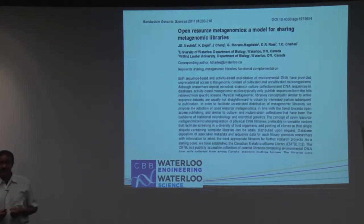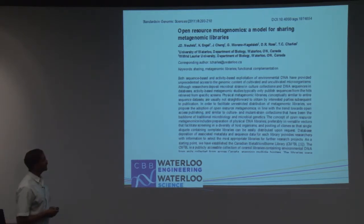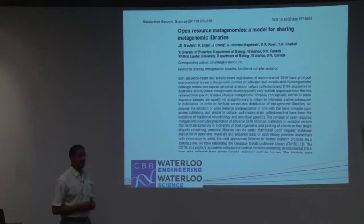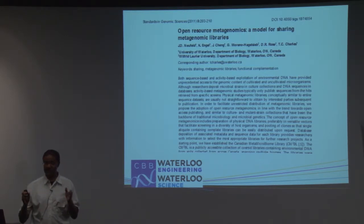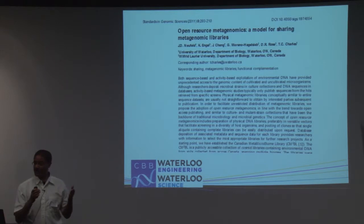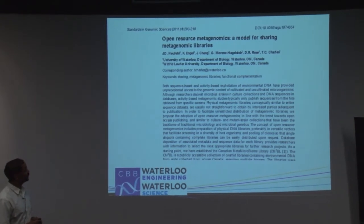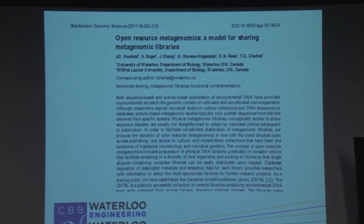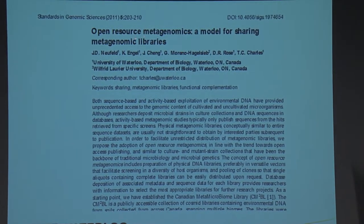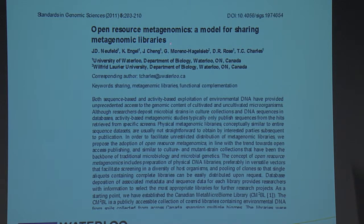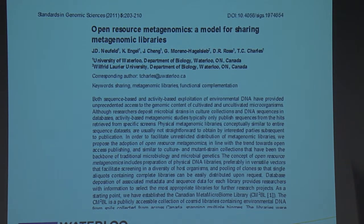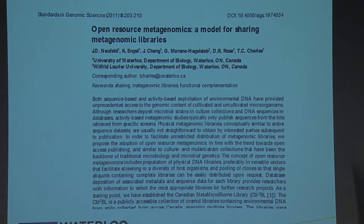To tap this potential, we have developed what we call open-resource metagenomics. The idea is that we make metagenomic libraries — pieces of DNA cloned into plasmids that can replicate in bacterial strains — and make those available to other scientists. Making these libraries is really the bottleneck; they're very difficult to make and require a high level of technical expertise. But once available, anybody can use them to find any type of gene they're interested in.